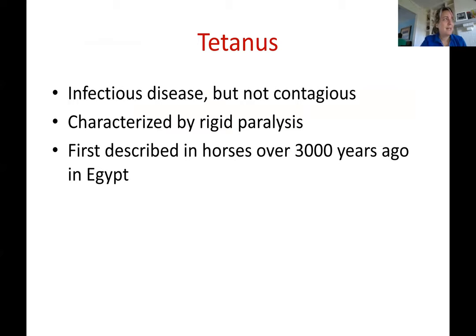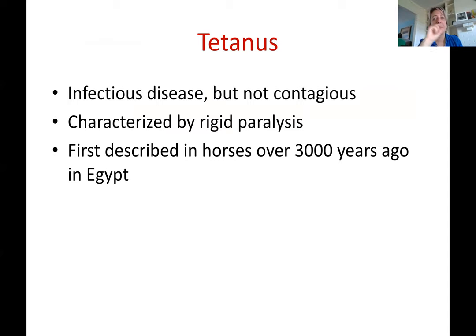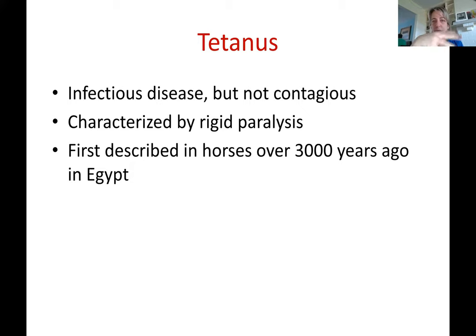Tetanus is an infectious disease caused by Clostridium tetani, but it is not contagious. It is caused by a bacteria, but it cannot spread from animal to animal or from animal to human, even though humans can also get the disease. Once an animal has it, you can touch him — you are not going to get the disease.